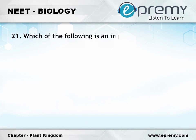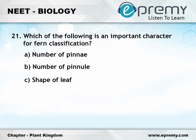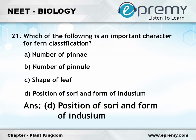This is brought to you by ePremie.com. Question number twenty-one: which of the following is an important character for fern classification? Option A number of pinnae, option B number of pinnules, option C shape of leaf, option D position of sori and form of indusium. The answer is option D position of sori and form of indusium.